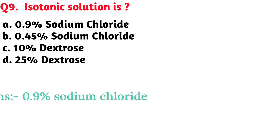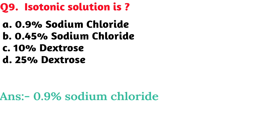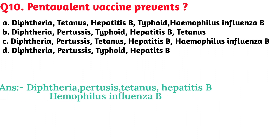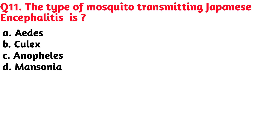Pentavalent vaccine prevents — Option C, diphtheria, pertussis, tetanus, hepatitis B, and Haemophilus influenzae B, is the correct answer. Next question: the type of mosquito transmitting Japanese encephalitis is —